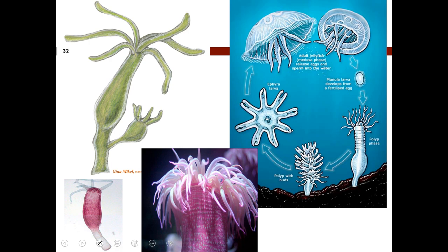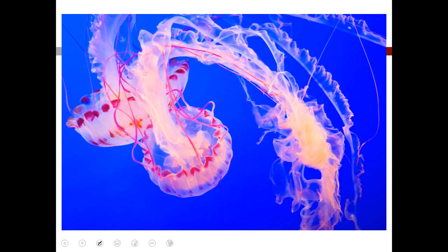Looking at cnidarian photos: we have the hydra and its life cycle. The polyp with buds eventually gives rise to the ephyra larva and then to the adult jellyfish. By way of the medusa form, eggs and sperm are released into the water; from these we get the planula larva, which develops from the fertilized egg, and then ultimately another polyp, which gives rise to buds again. This also shows a sea anemone and jellyfish examples.